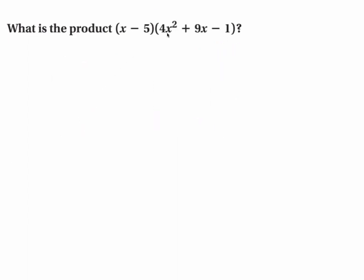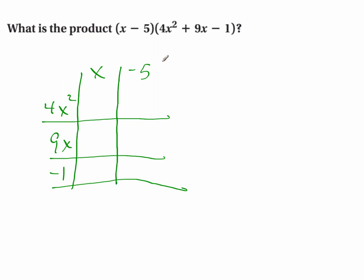What do you do when you have a product like this? Well, this is a time when the area model may actually serve you fairly well. A lot of students lose the cross terms when they just try to FOIL it. So let me show you what the area model looks like on this. This is x - 5, that's my first term. 4x², 9x - 1.